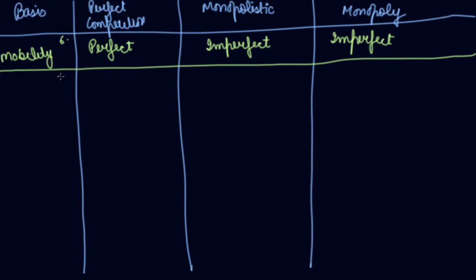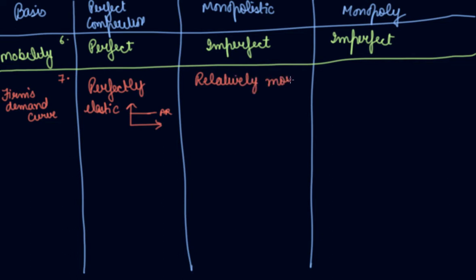The seventh criterion we can take is the firm's demand curve. Perfectly elastic in perfect competition—this is the shape. Then relatively more elastic in monopolistic competition.